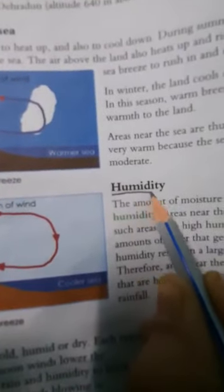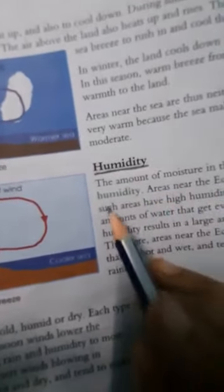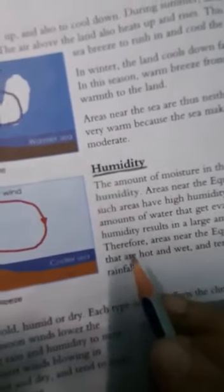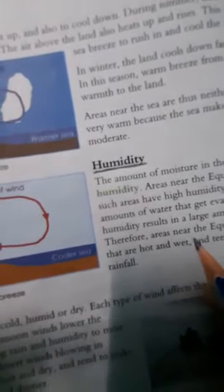Humidity - H-U-M-I-D-I-T-Y. The amount of moisture in the air is known as humidity. Areas near the equator or hot areas have high humidity.